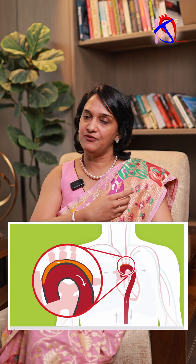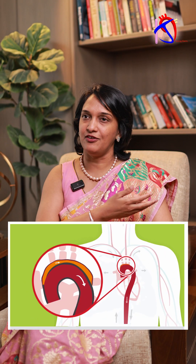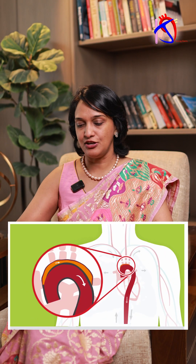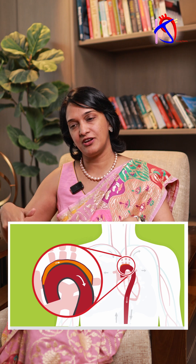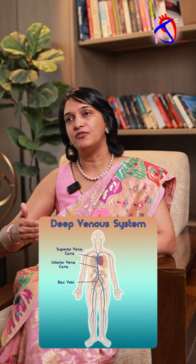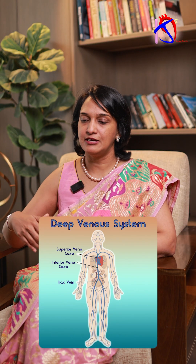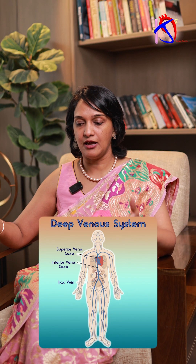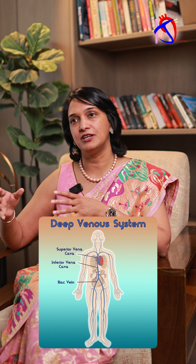The aorta keeps giving branches, like the carotid artery, subclavian artery, mesenteric arteries, and renal arteries. Then it goes down and divides into two major vessels that supply blood to the lower extremities.